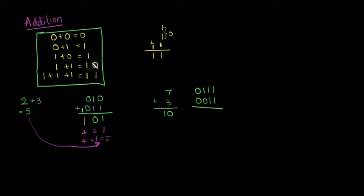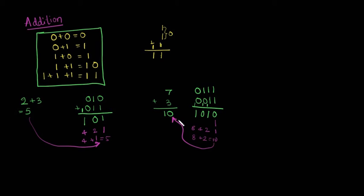1 plus 1 is 0, we carry 1 forward. 1 plus 1 is 0, carry 1 forward. Then 1 plus 1 plus 1 is 1, carry forward 1, and 1 plus 0 is 1, carry 1, and 0 plus 0 plus 1 is 1. Let us verify: the weights are 1, 2, 4, 8. 8 plus 2 is 10. The two values are the same. This is how we perform binary addition of two n-bit numbers.